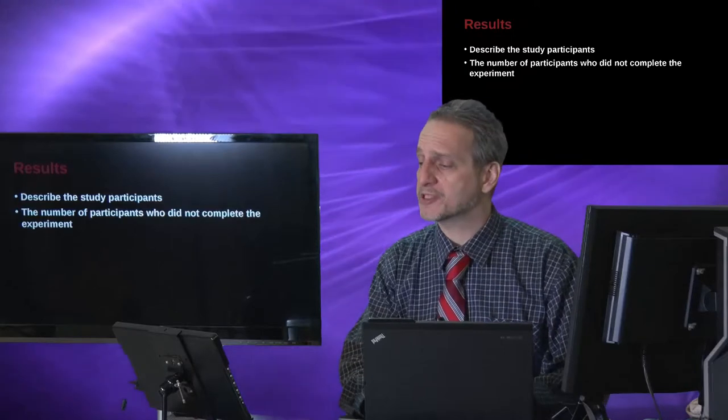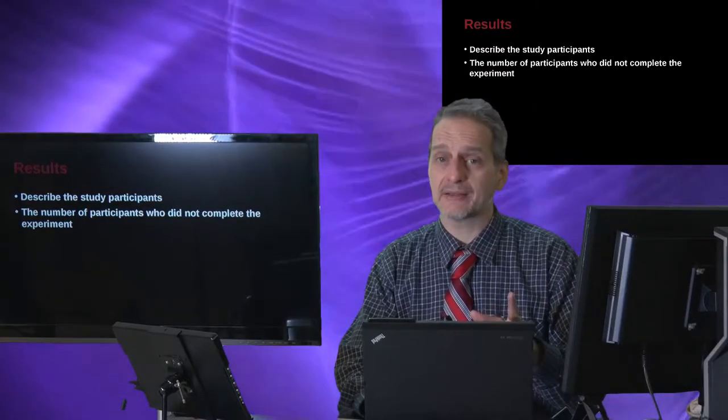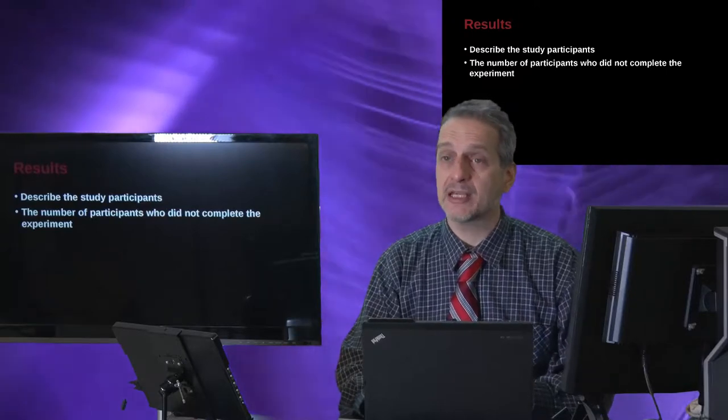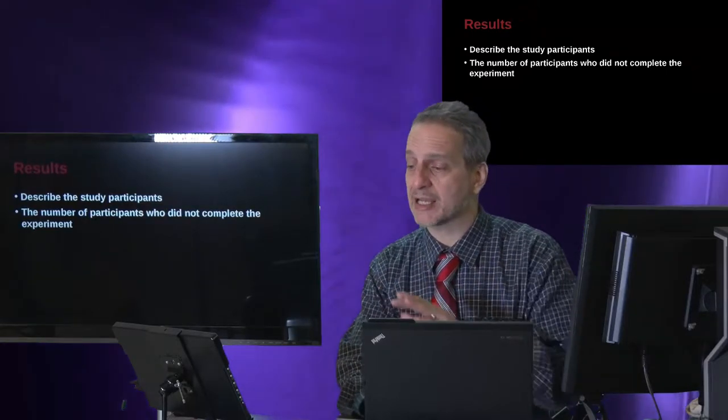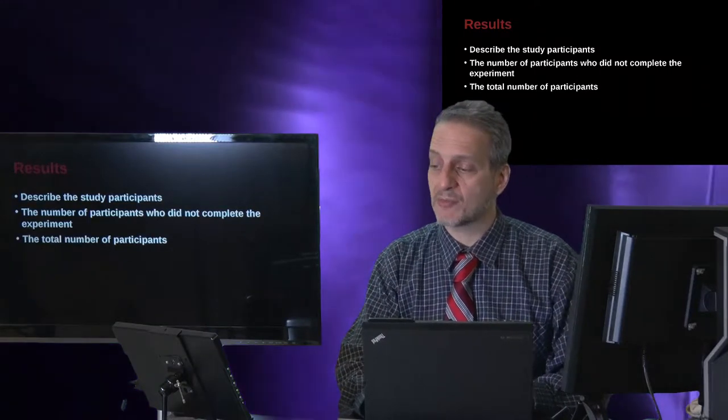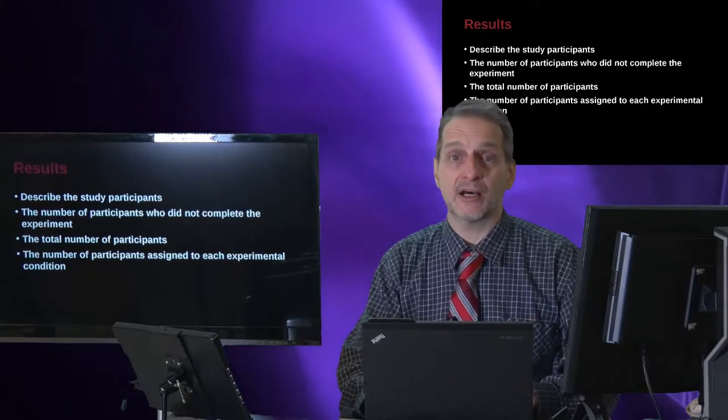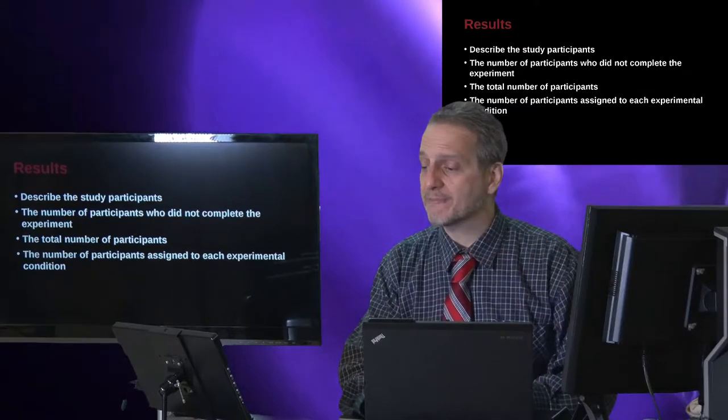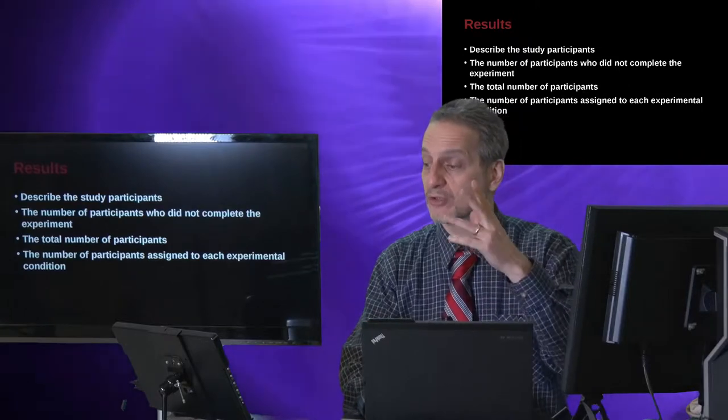The number who participated, and you may include those who did not finish the experiment. So the incomplete numbers, which in social science can be quite large, but in applied science areas is often quite small. The total number of participants - we really need to get an idea of the sample frame. That is, where did you do this, how did you do it, and who did you do it with or to.